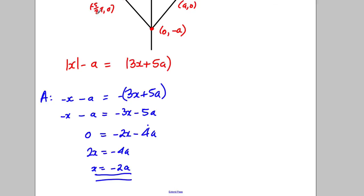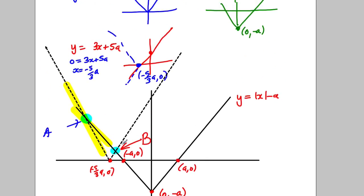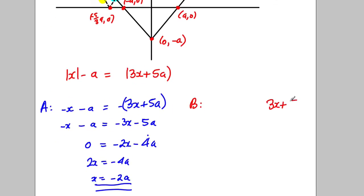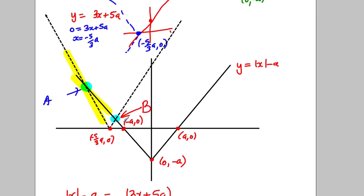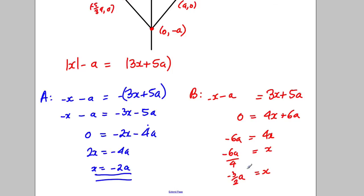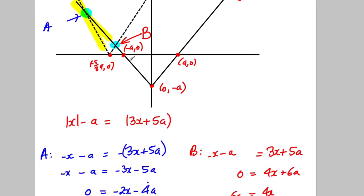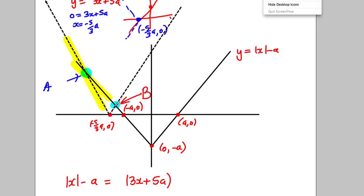For point B, we use the positive part of y equals modulus of 3x add 5a, so 3x add 5a, and set it equal to the negative part of the other graph, negative x subtract a. Adding x and a: 0 equals 4x add 6a, so 4x equals negative 6a, giving x equals negative 3a/2. Both solutions are negative: x equals negative 1.5a and x equals negative 2a, which looks right in accordance with our graphs.